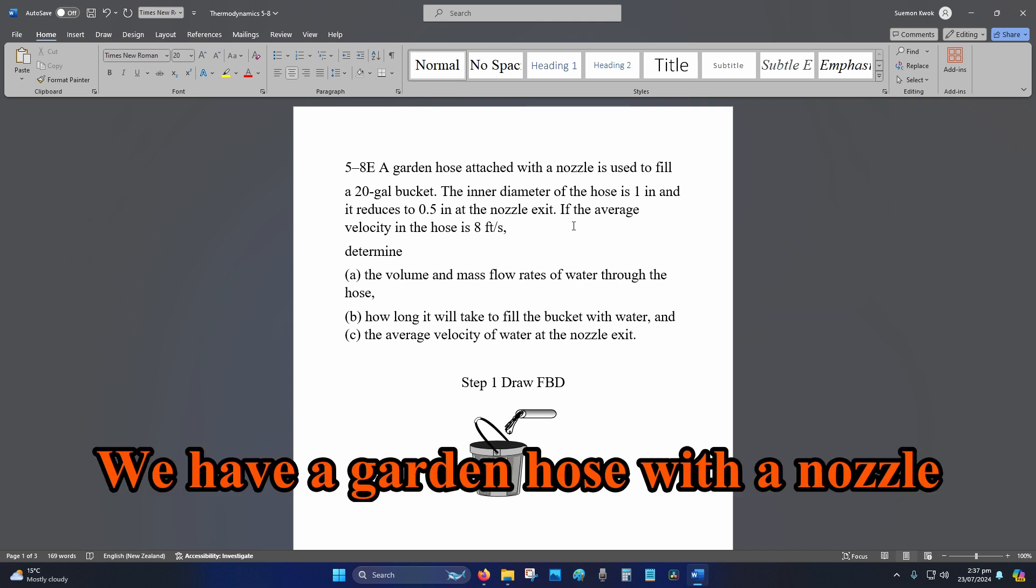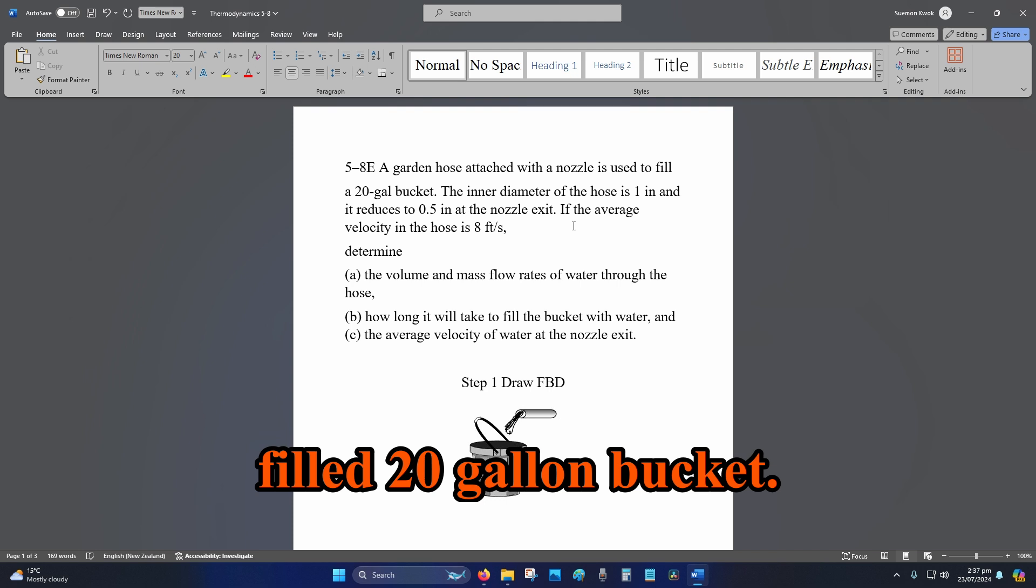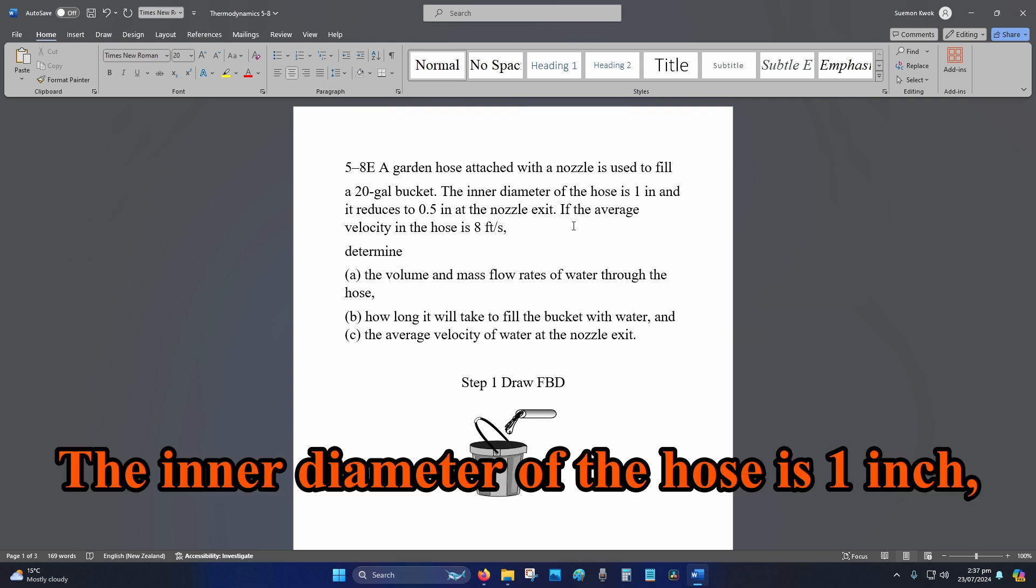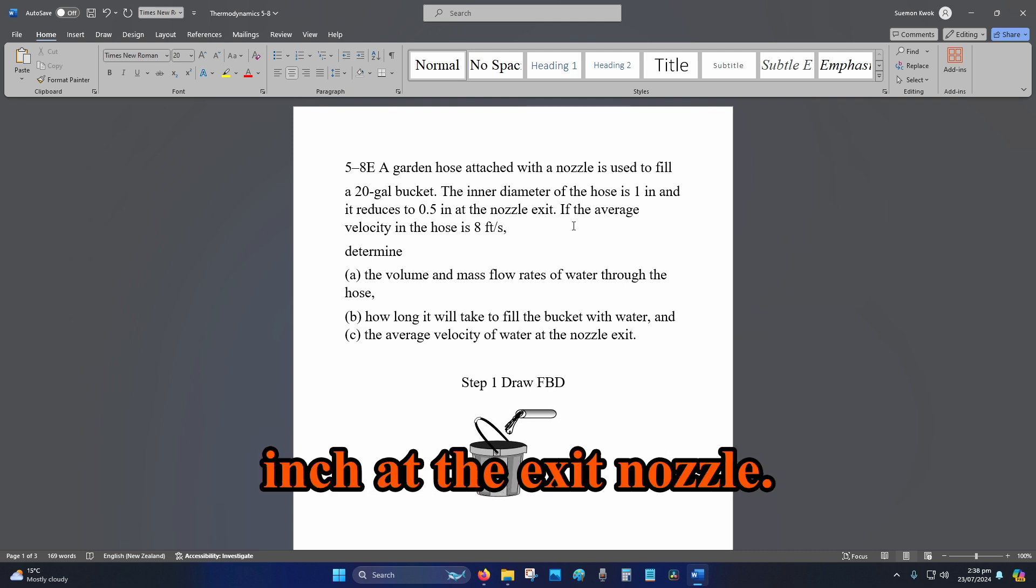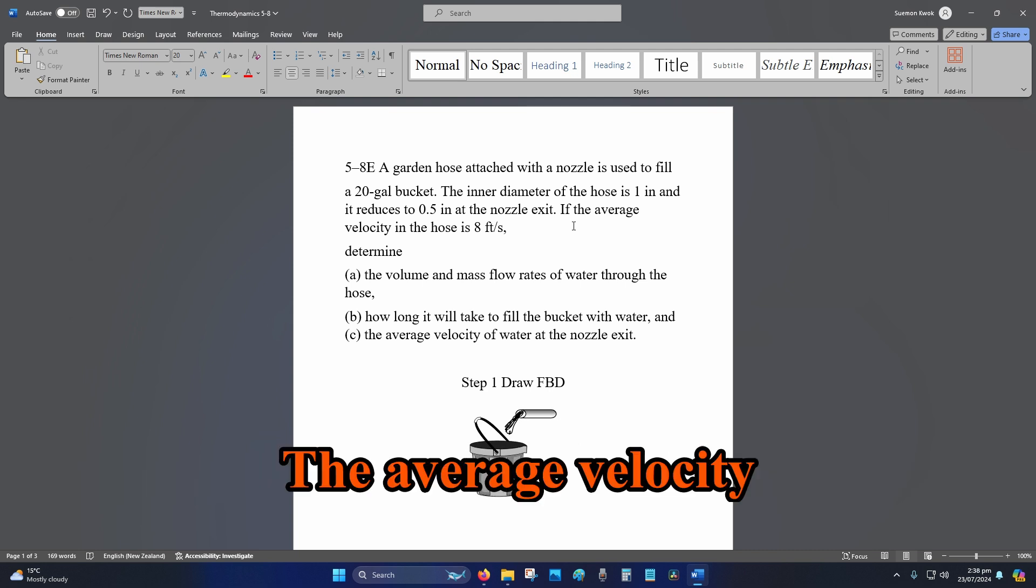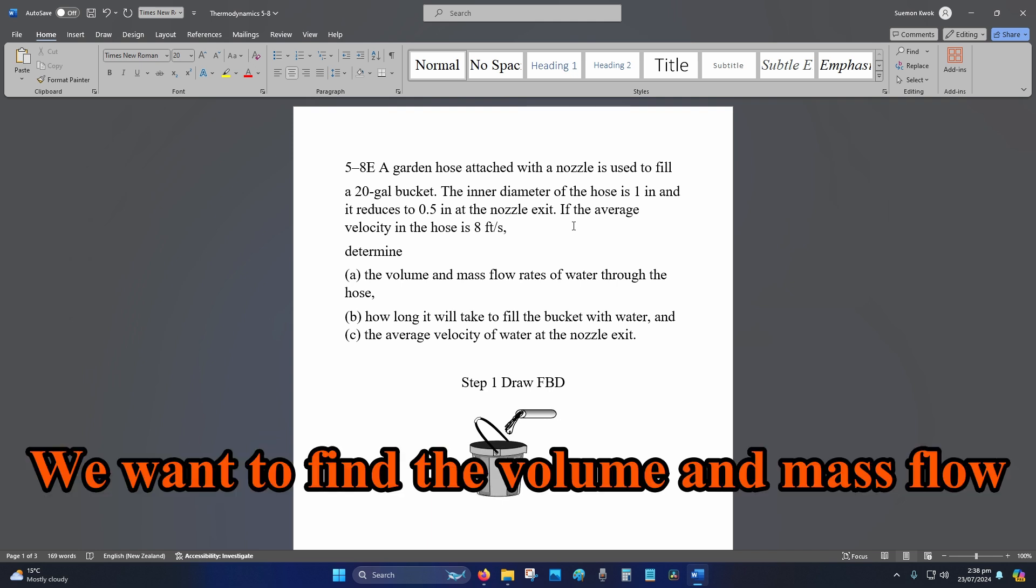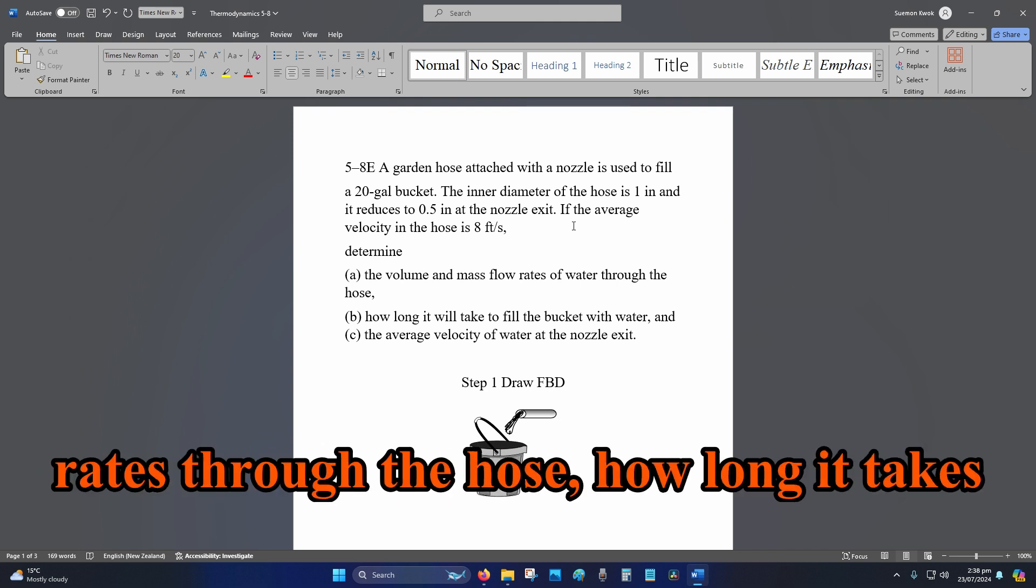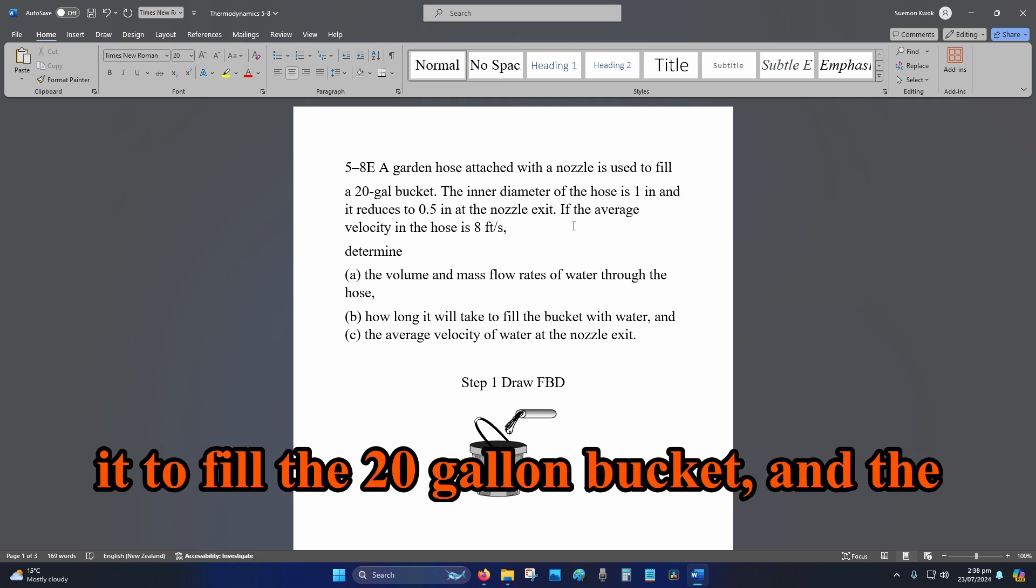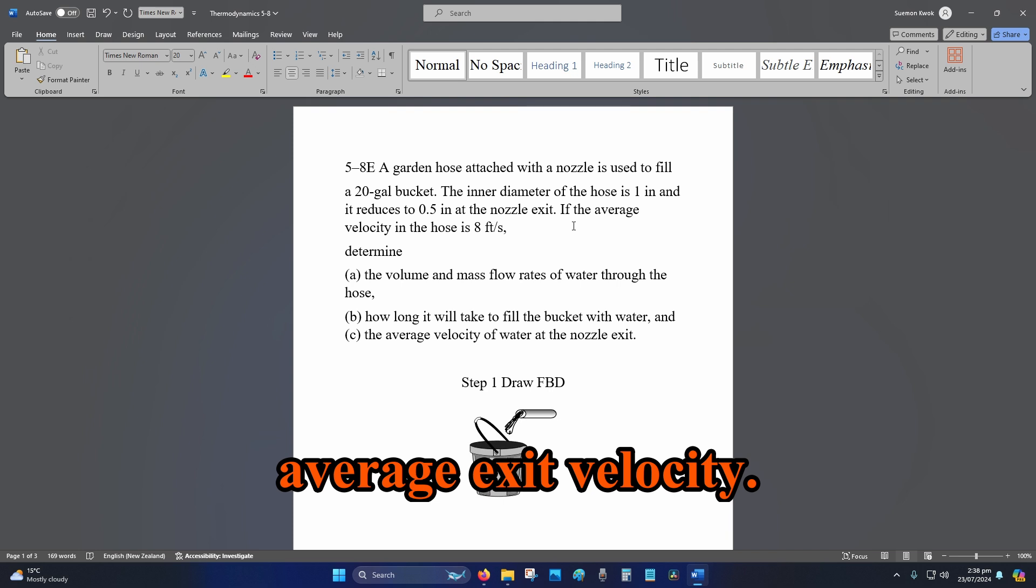We have a garden hose with a nozzle that filled a 20 gallon bucket. The inner diameter of the hose is 1 inch, it is reduced to half an inch at the exit nozzle. The average velocity is 8 feet per second. We want to find the volume and mass flow rates through the hose, how long it takes to fill the 20 gallon bucket, and the average exit velocity.